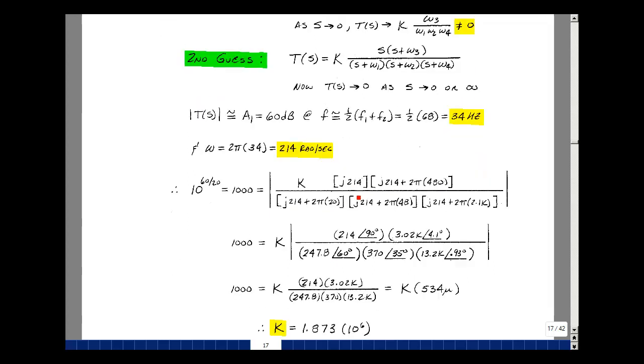As we're taking a ratio, let's put this in the polar form. It's just 214 at angle 90 degrees. Punching these two numbers in, I found it was 3.02k at 4.1 degrees. This one was 247.8 at 60 degrees. This one was 370 at 35 degrees. And this one was equal to 13.2k at 0.93 degrees.